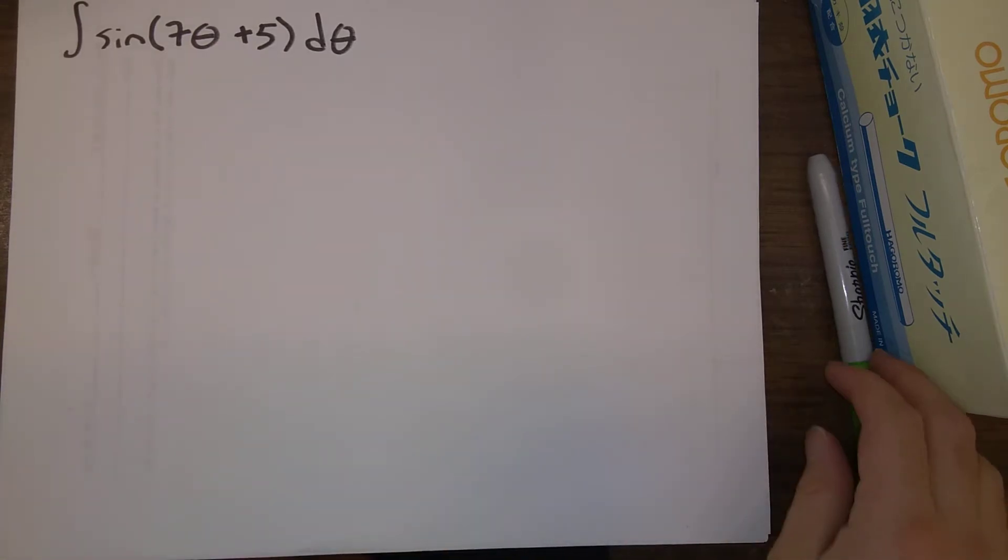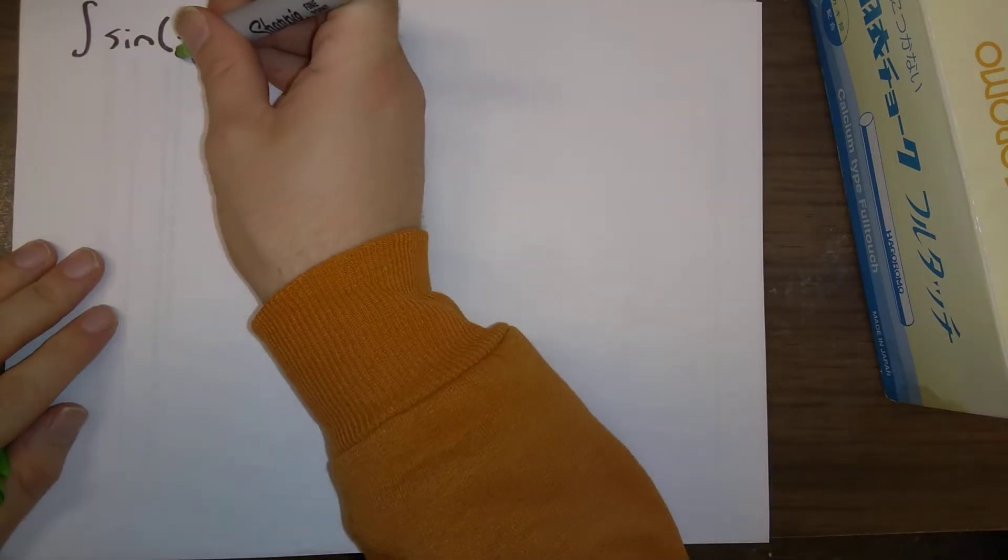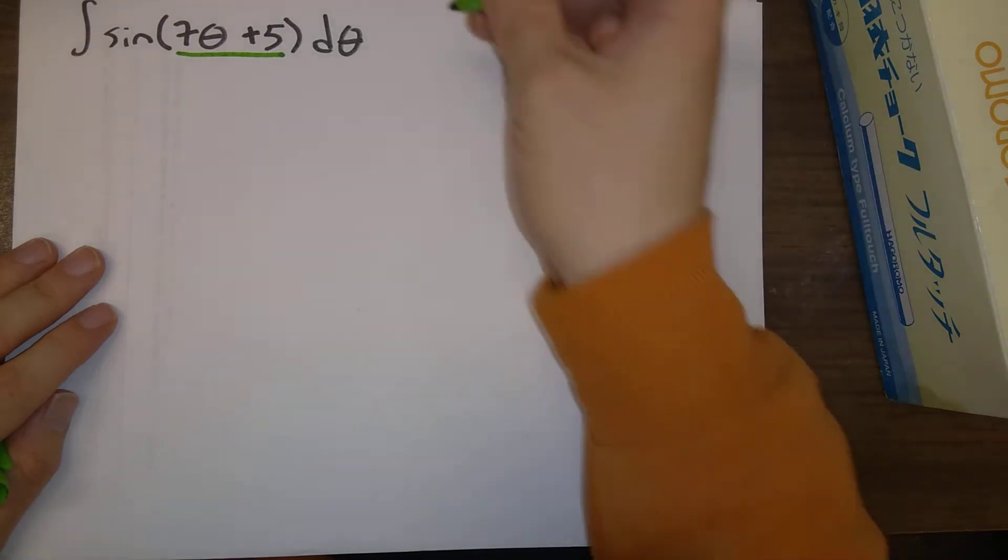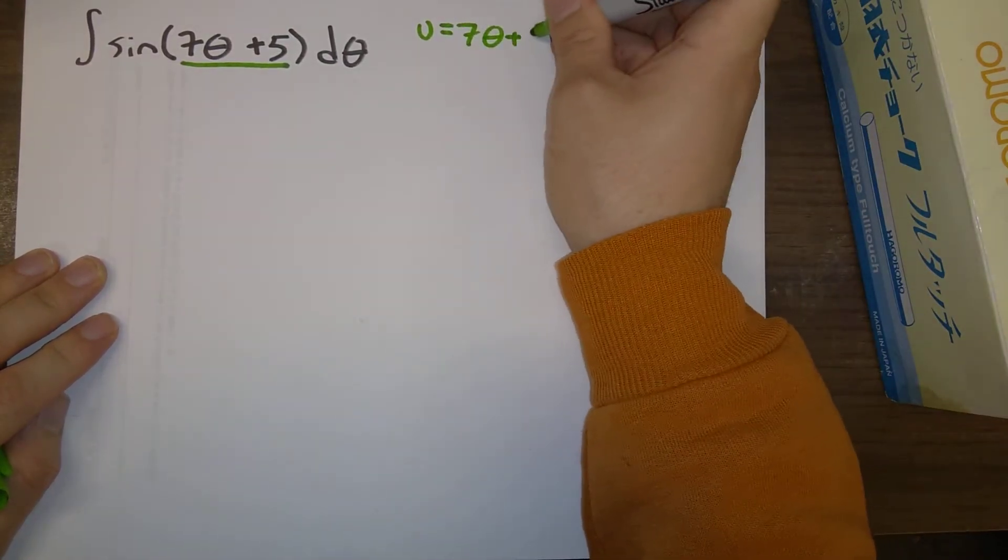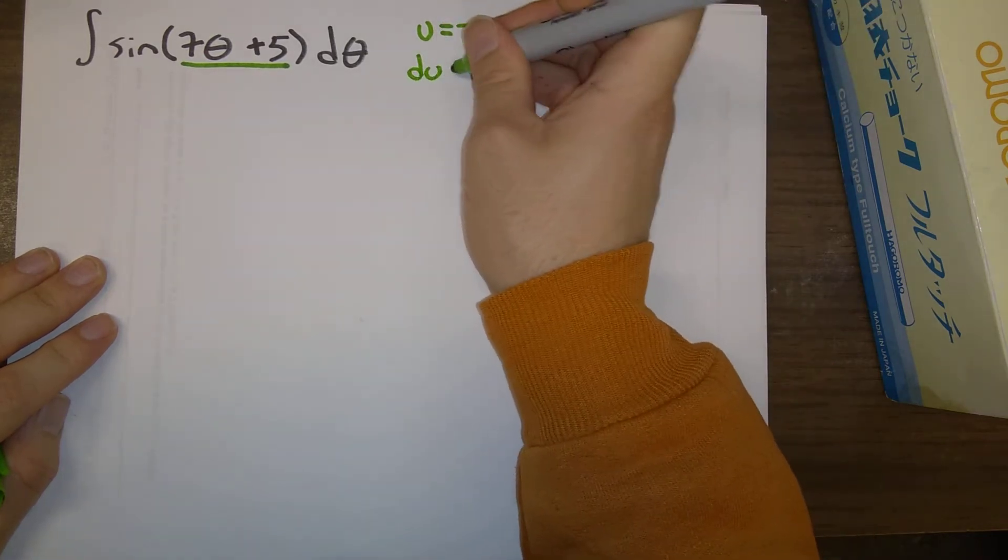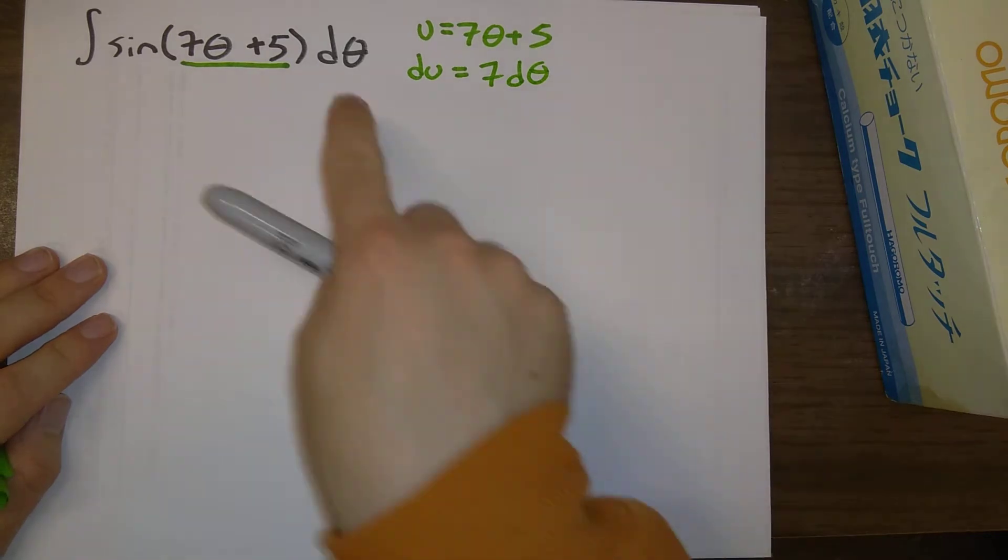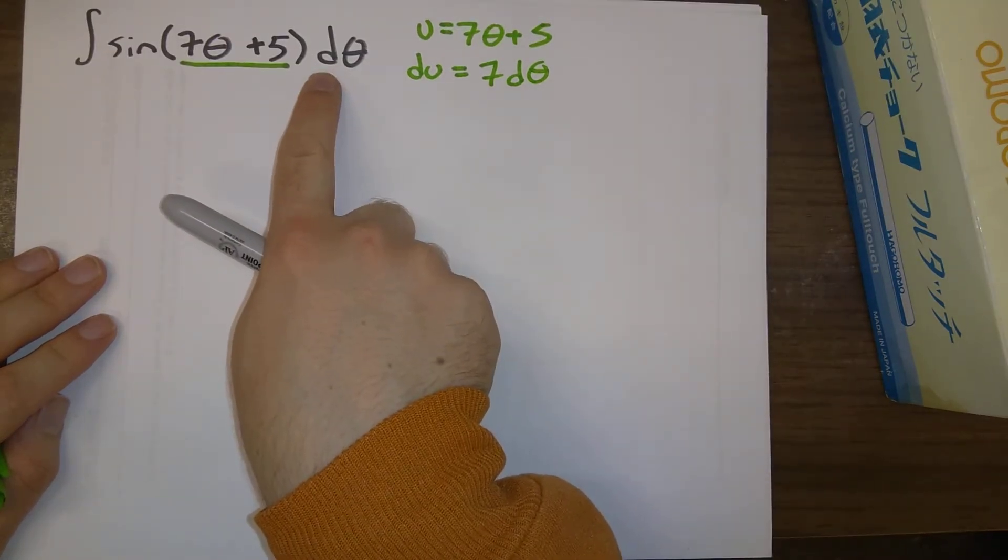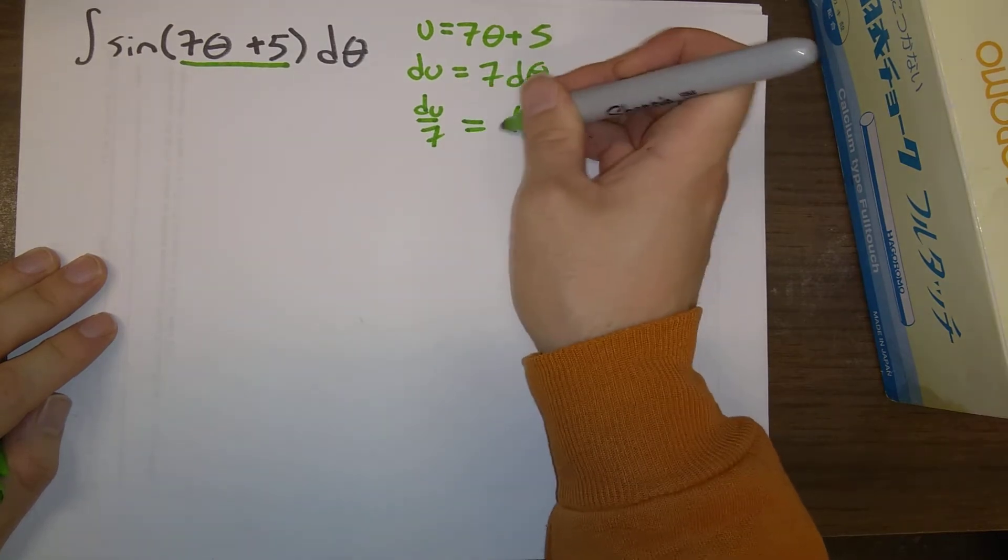So let's say I ask you to find the indefinite integral, the antiderivative, of sine of 7 theta plus 5. So it's very suggestive that we should be thinking of u as 7 theta plus 5. So that means du is equal to 7 d theta. We only have d theta. We don't have a 7 d theta. So that means du over 7 is d theta.